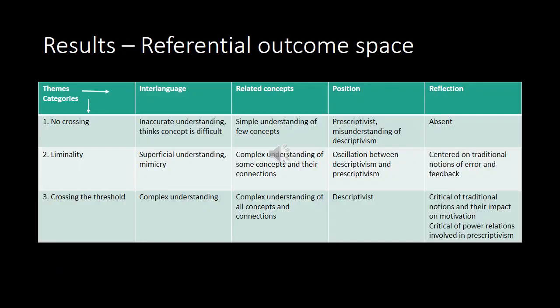Now this is the referential outcome space. The categories are: no crossing, meaning those students who did not cross the threshold at all and did not move forward in the path toward learning the concept of interlanguage deeply — three students were located in this category. Then there is the category of liminality, where students oscillate between appearing to learn the concept more deeply and going back to traditional notions of error as something bad, as a product of laziness rather than the interlanguage system. Finally, there are students who crossed the threshold, who adopted a descriptivist, scientific approach to error — viewing error not as a product of laziness or cognitive deficit, but as the result of the current state of the interlanguage system.